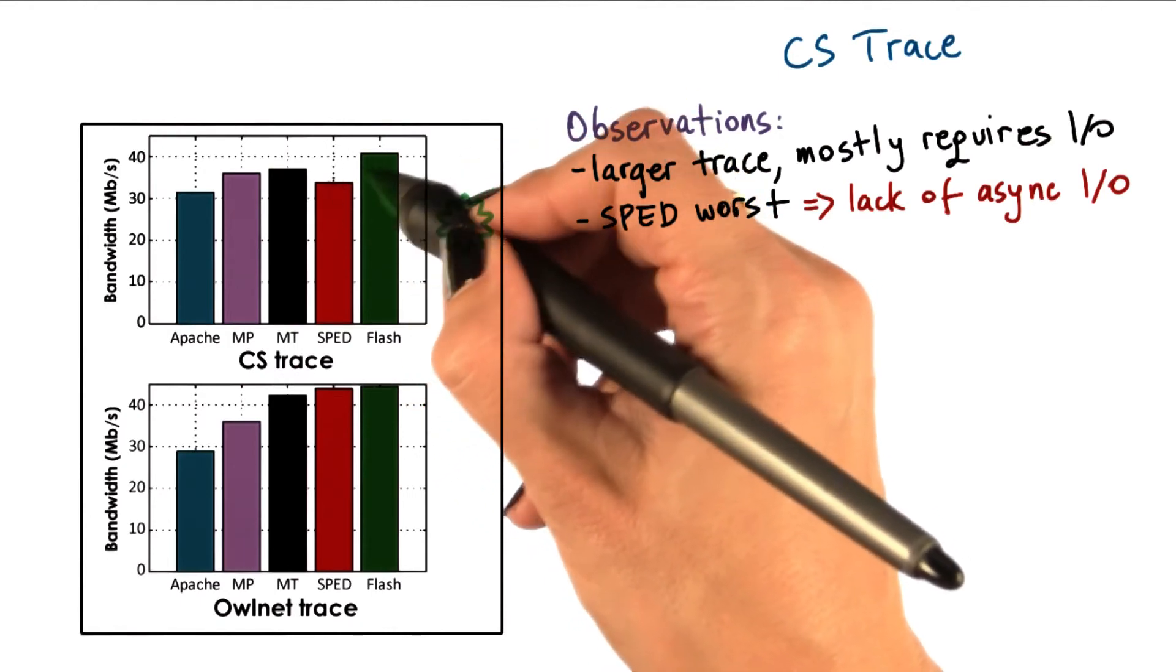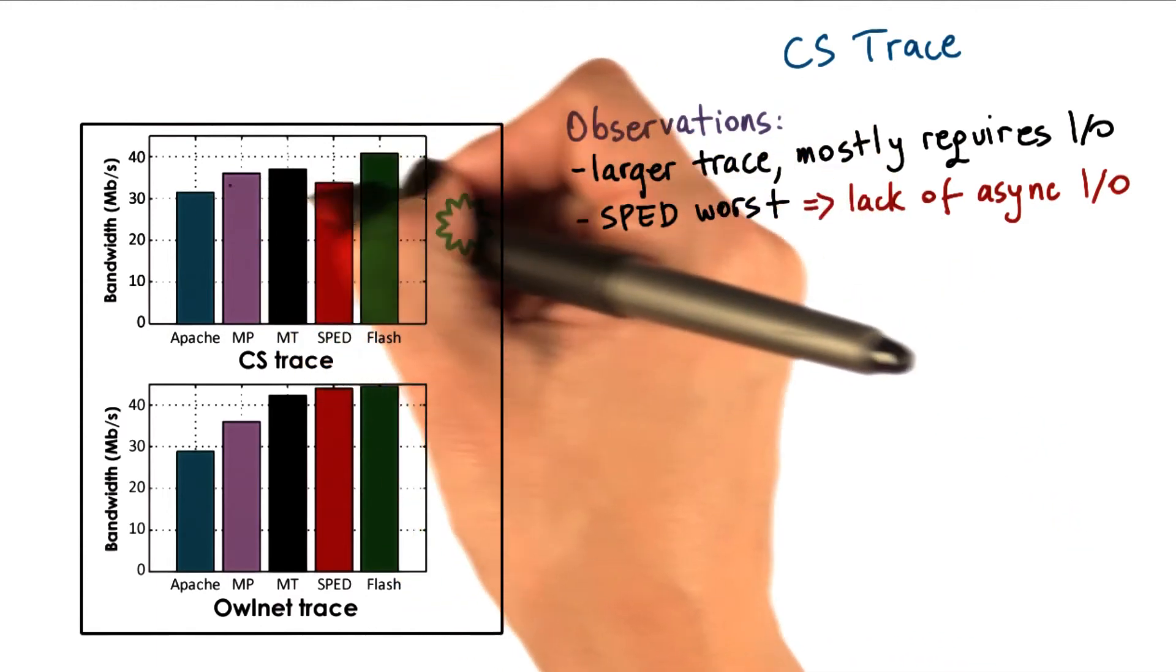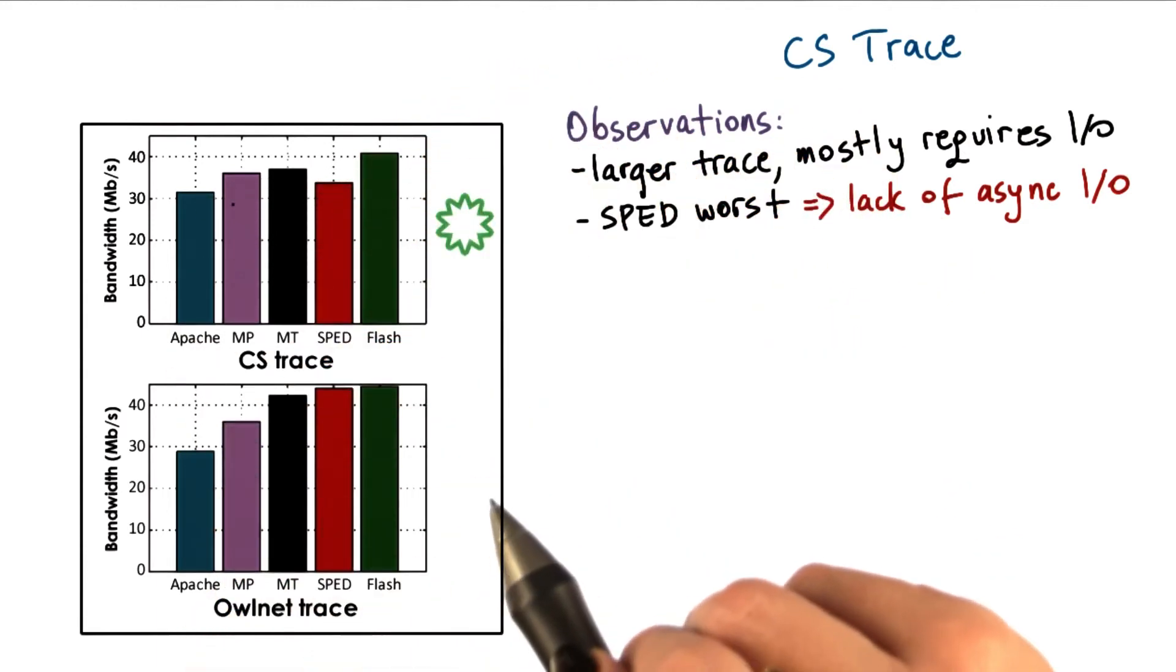So relative to where it was, close to flash, now it's significantly below flash, and in fact, it's below the multiprocess and the multithreaded implementations.